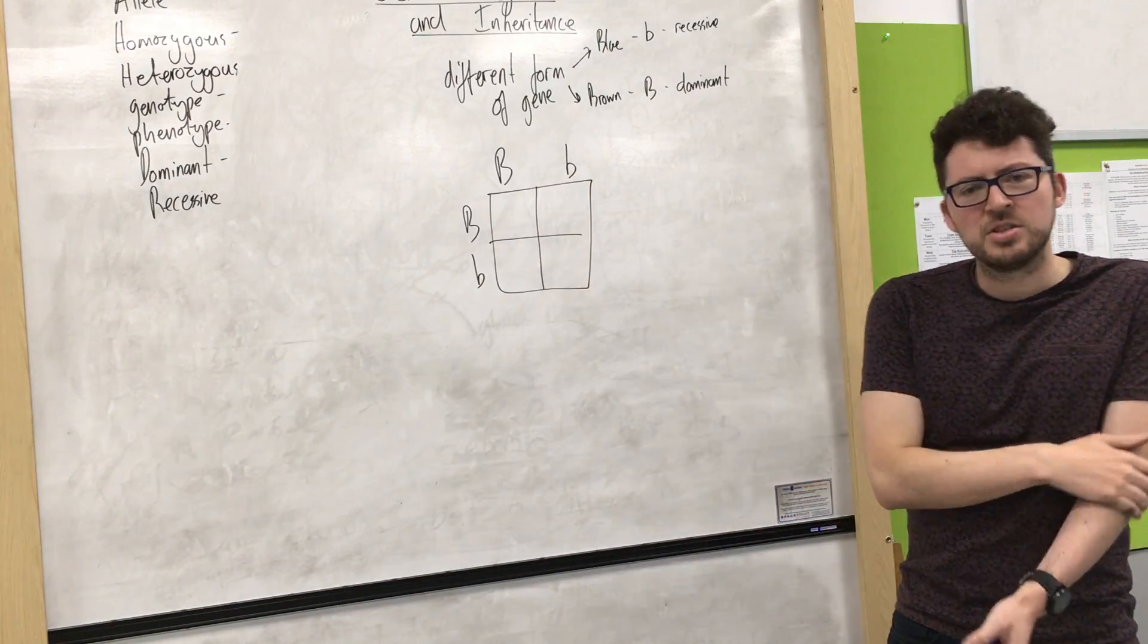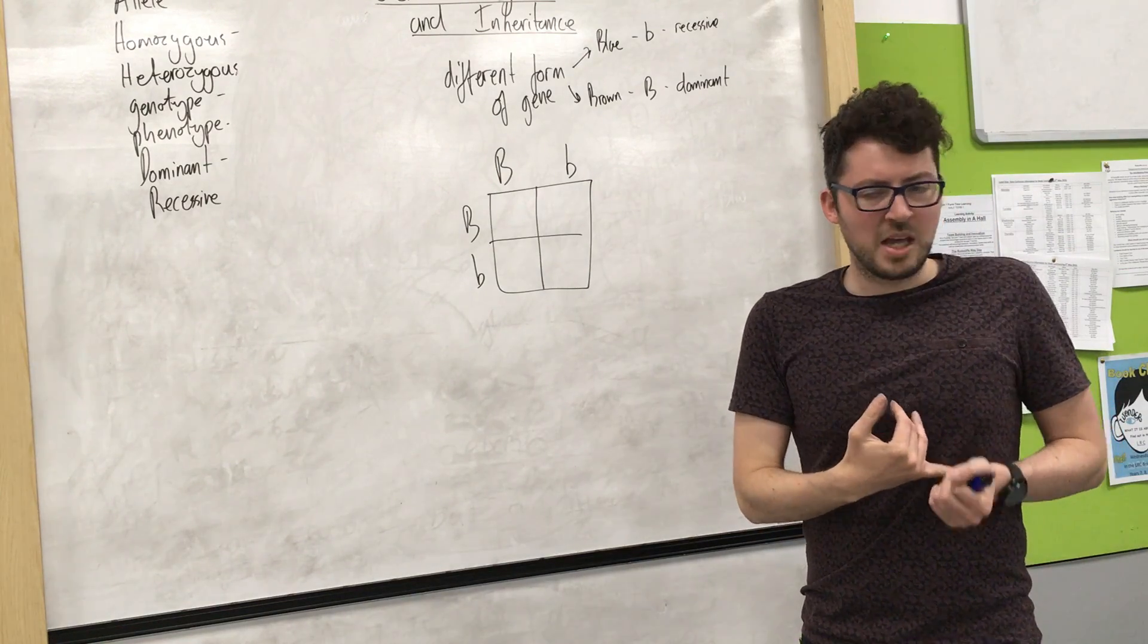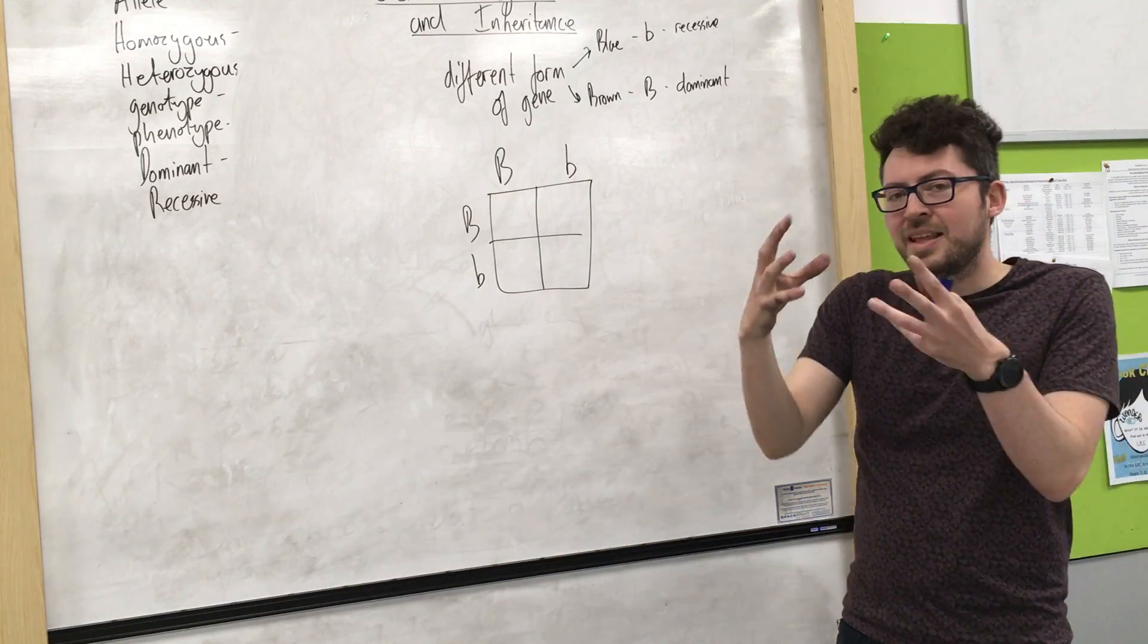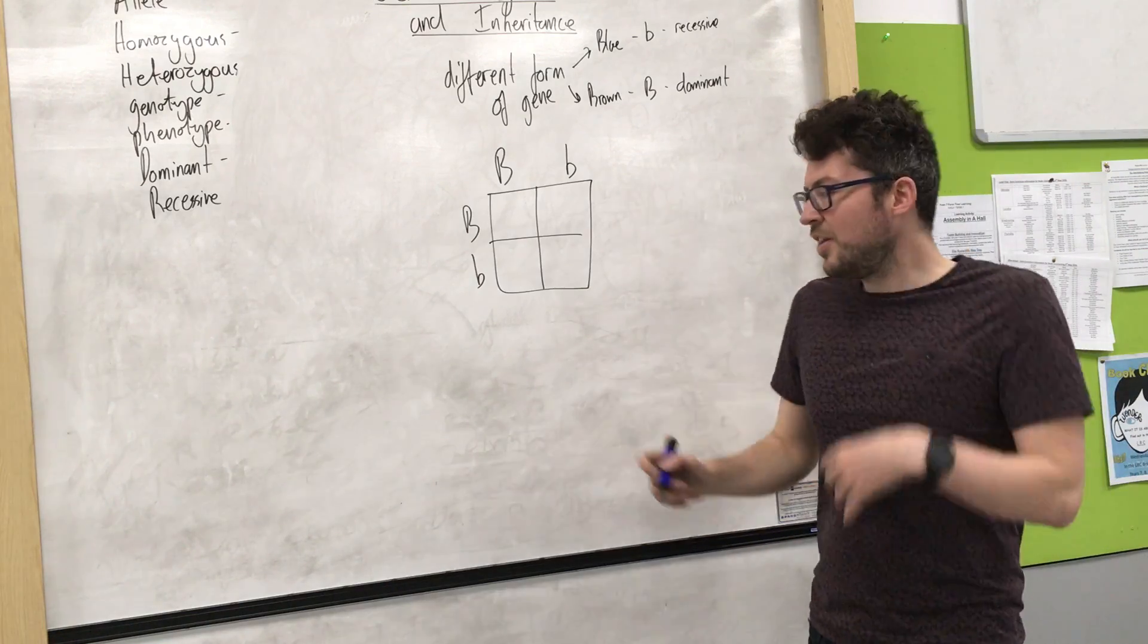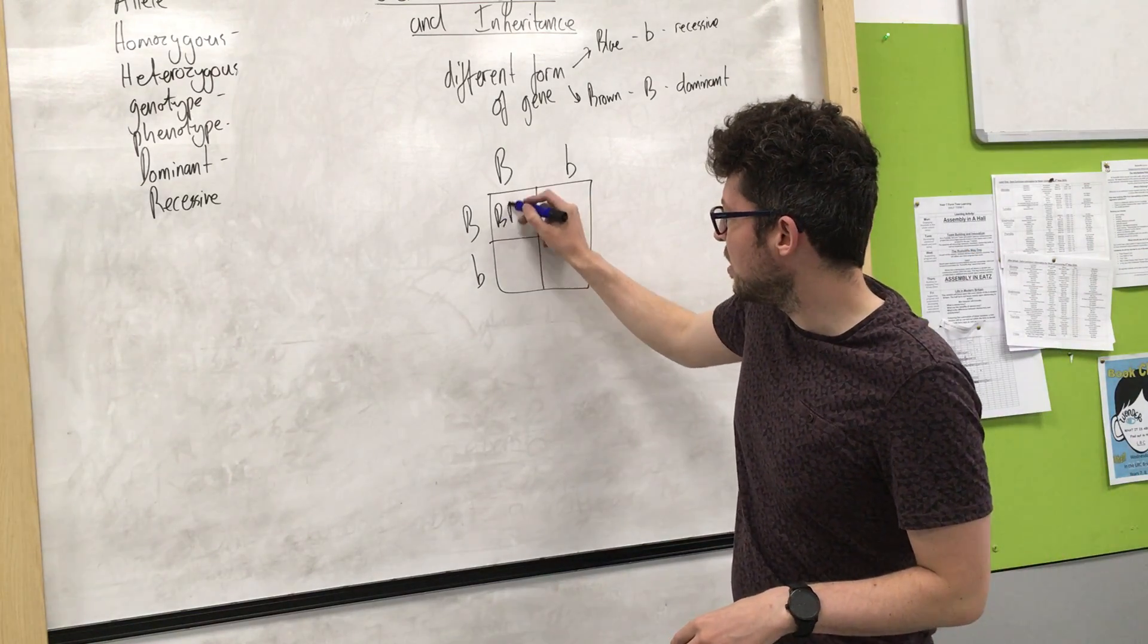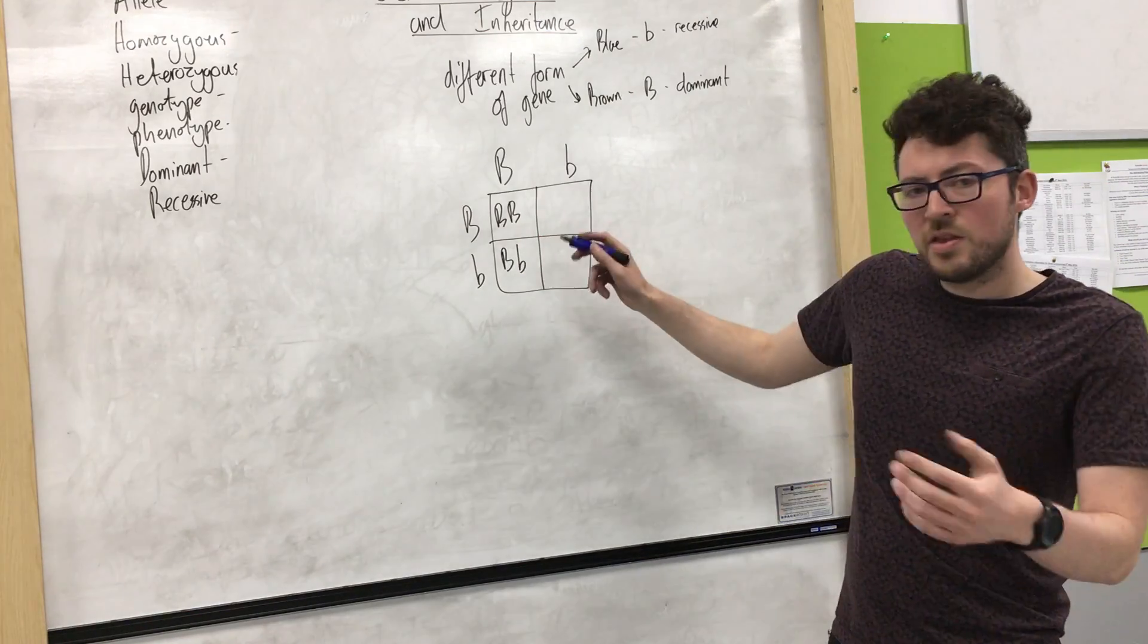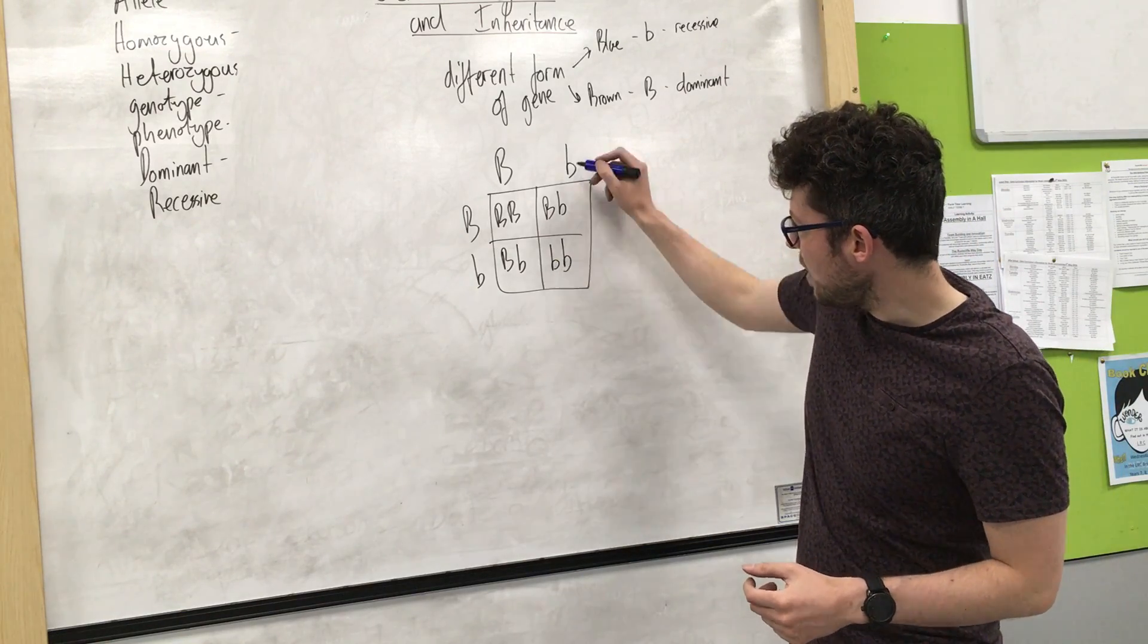Now we can use this genetic diagram to predict the likelihood of their children's eye colours. So we go through the diagram and we cross them and that would be the equivalent of combining the sex cells so the sperm and the egg. So the first example large B large B, the second one large B small b, the third one large B small b and the final one small b small b.